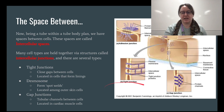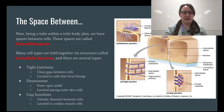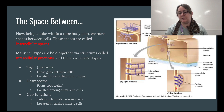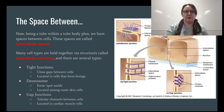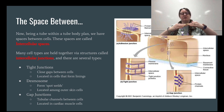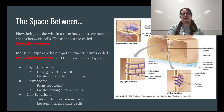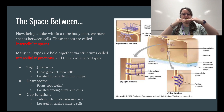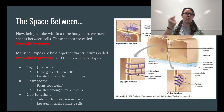Gap junctions look different — instead of full proteins, gap junctions have a hole through them, kind of like a straw. These are tubular channels between cells, located in the cardiac muscle cells. When we talk about the cardiac system next semester, we'll mention how all the cardiac muscle cells are held together by intercalated discs, and those discs have gap junctions going through them. These protein channels allow signals to travel super fast without having to cross two cell membranes and an intracellular space.